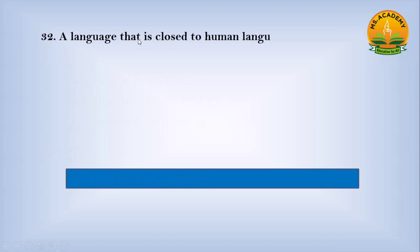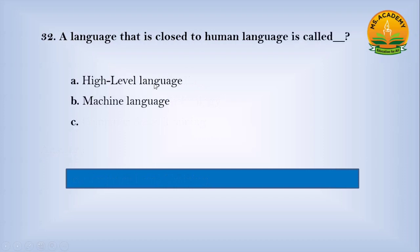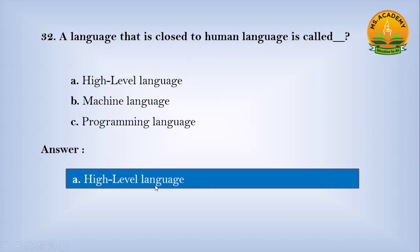A language that is close to human language is called dash. Option A High level language, option B Machine language, option C Programming language. Answer: A. Number High level language.